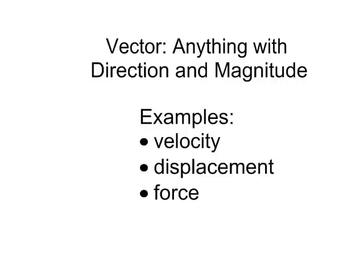Displacement is a fancy word for distance, that's the vectorized distance. Displacement means that you can be 40 kilometers to the east, and so 40 kilometers would be the magnitude, east would be the direction.